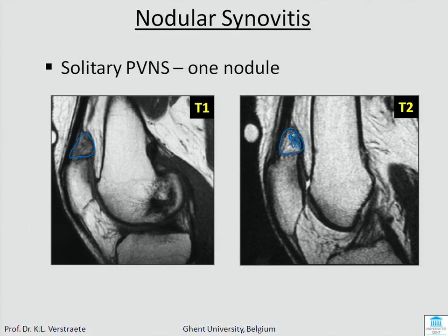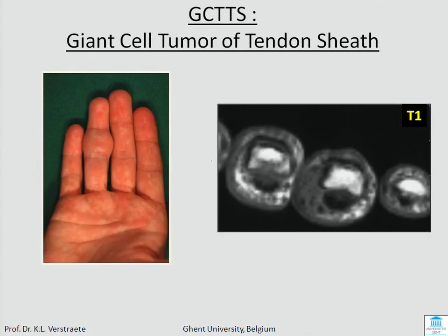When this lesion occurs in a tendon sheath, especially in the hands and feet, the name is giant cell tumor of tendon sheath, and there is always a close connection to the tendons. It will be dark on T1 and dark on T2.